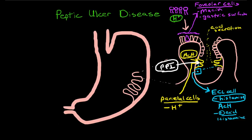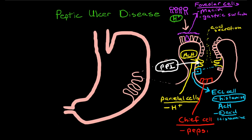Our columnar epithelium continues all the way down to the bottom, and at the bottom of the pit we find what are called chief cells. The chief cells secrete pepsinogen, which is an enzyme that breaks down protein — so it's a protease. This is also stimulated directly by acetylcholine.